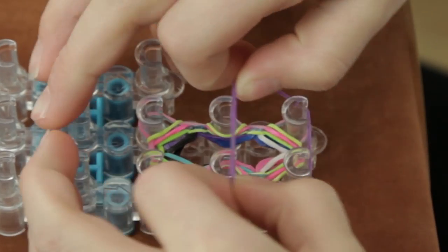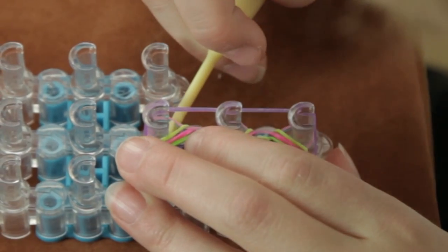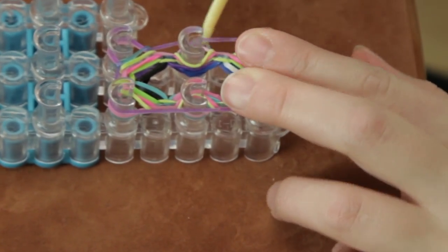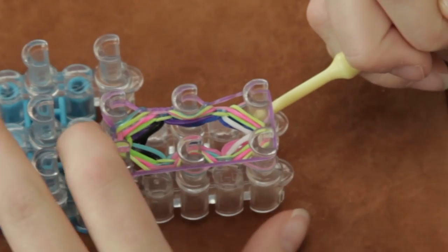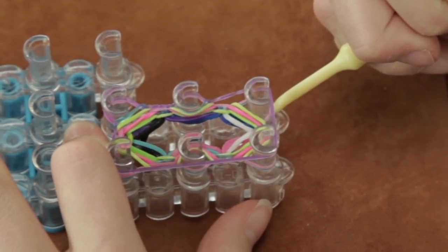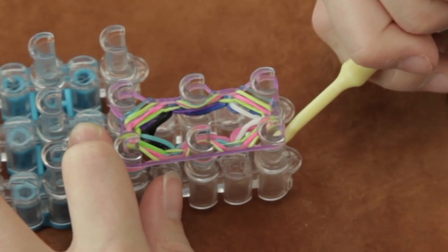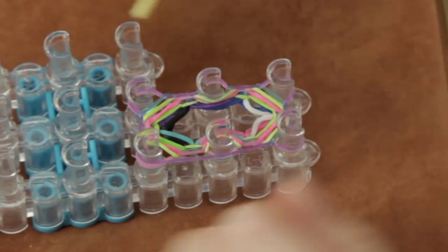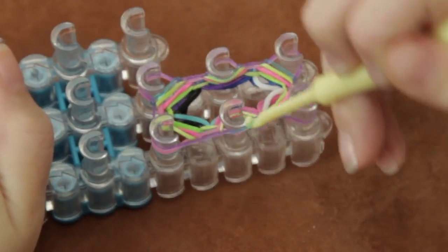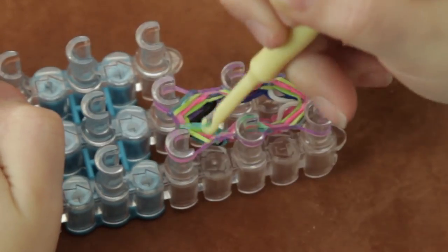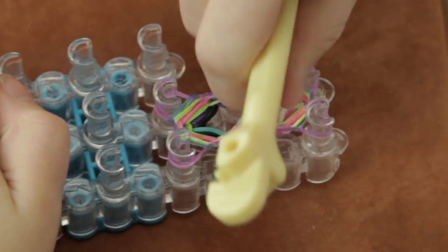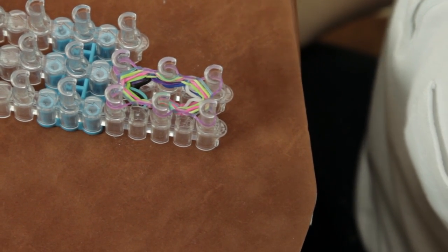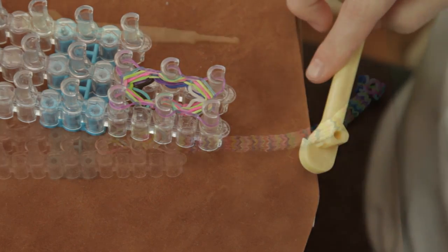And then you're going to take your next rubber band, put it all over all of them. Only grabbing the blue. Make sure you don't stretch them really far like that. You just want to keep them in, because then it will pull the rubber bands off the peg and you don't want that. Okay, so now I'm going to come back halfway with the whole bracelet, probably up to here.